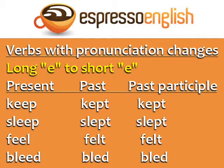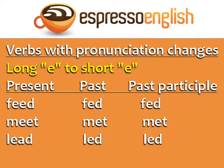Another group of irregular verbs is verbs with pronunciation changes. For example, long E to short E: Keep — kept — kept. Sleep — slept — slept. Feel — felt — felt. Bleed — bled — bled. Feed — fed — fed. Meet — met — met. Lead — led — led.